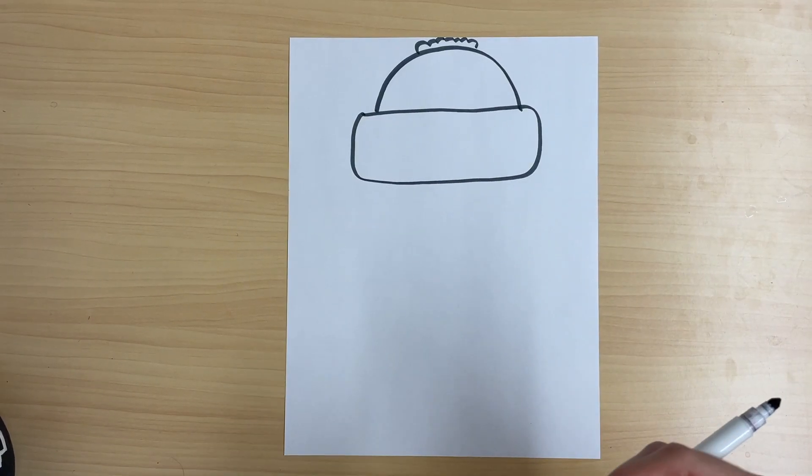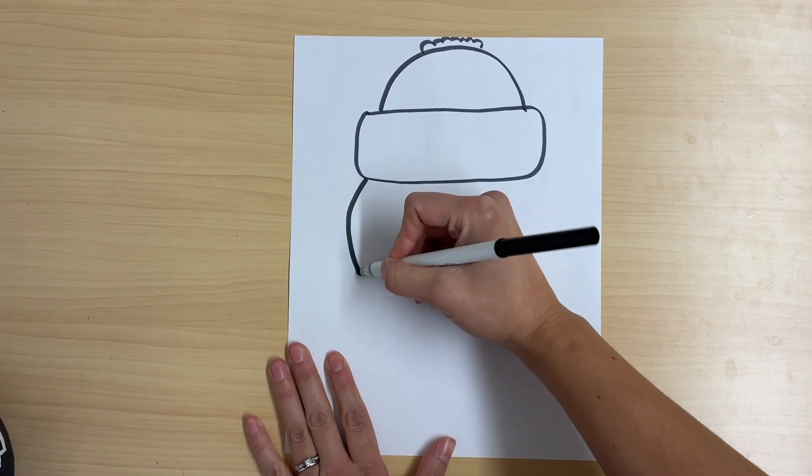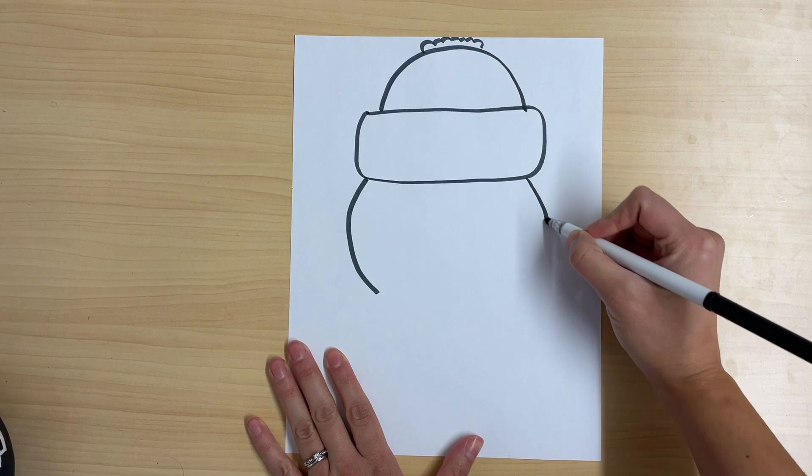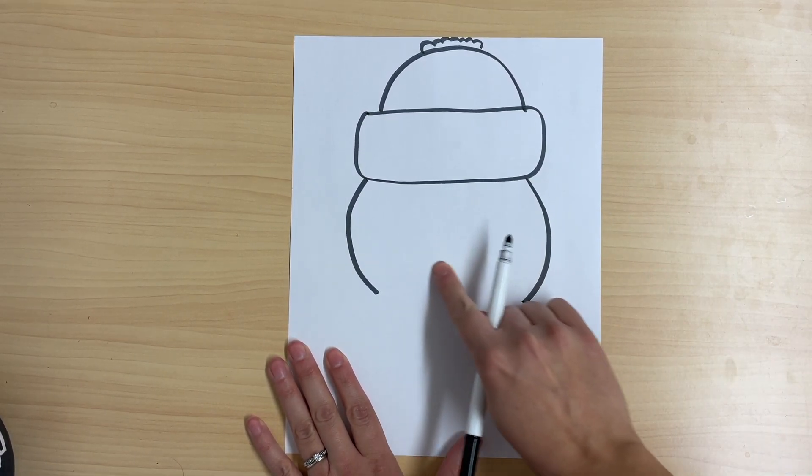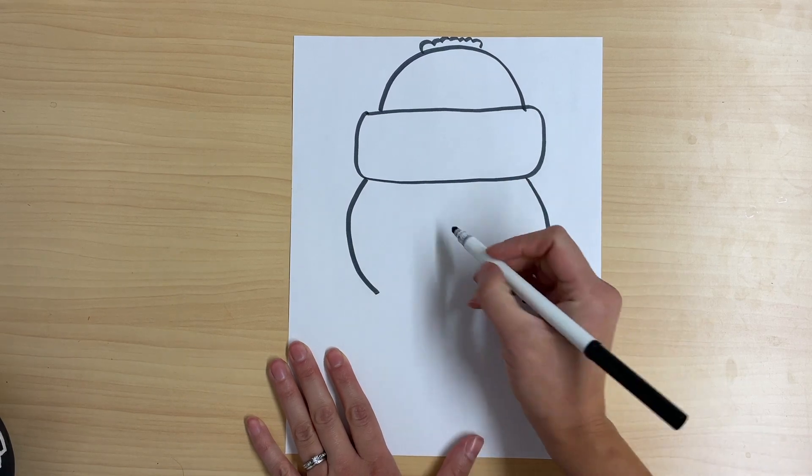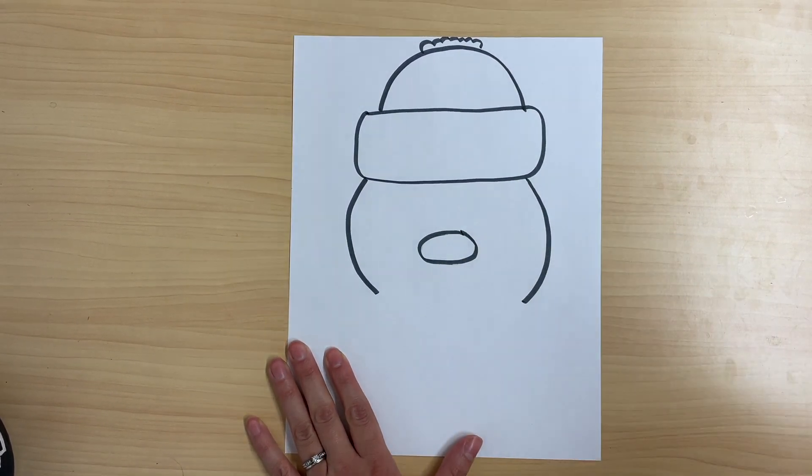Now I'm ready to draw the face of the penguin. I'm going to draw two curved lines and then I'm going to find the middle of the space that I created with the curved lines and I'm going to draw an oval and this is going to be the beak of the penguin.